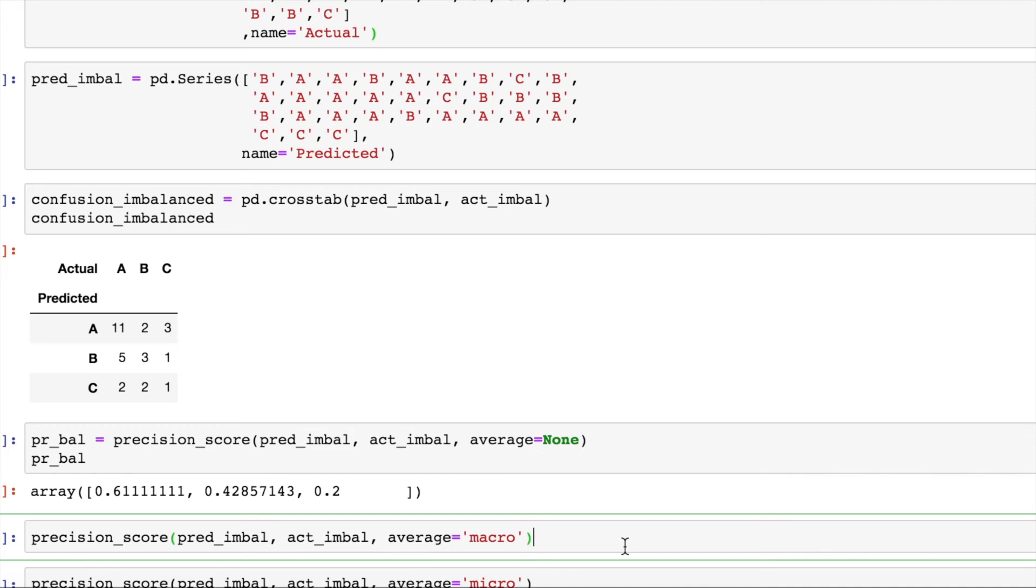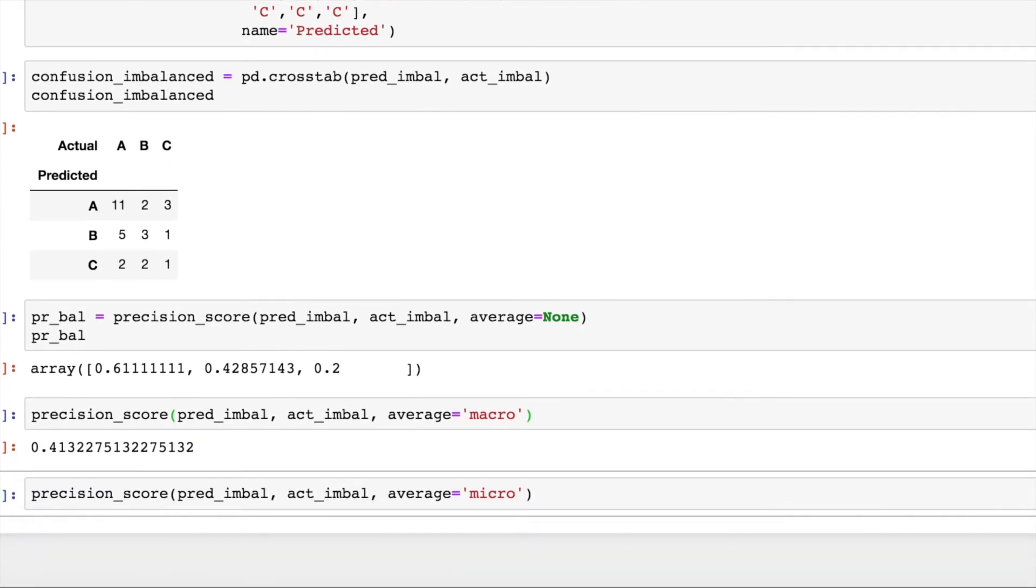What I do is, I calculate the macro average. The macro is basically the sum of individual precisions divided by the total number of classes which turns out to be 0.41.